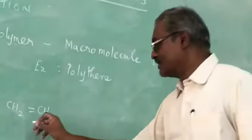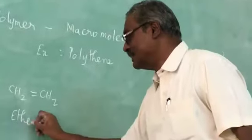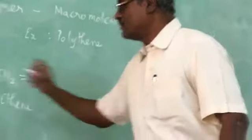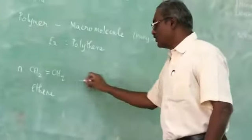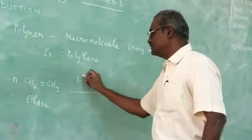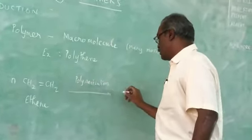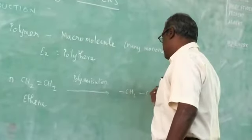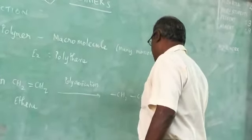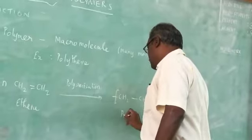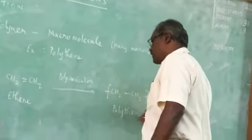What is the name of this compound? It is ethene. Ethene. So n number of ethene undergoes polymerization to form polythene.